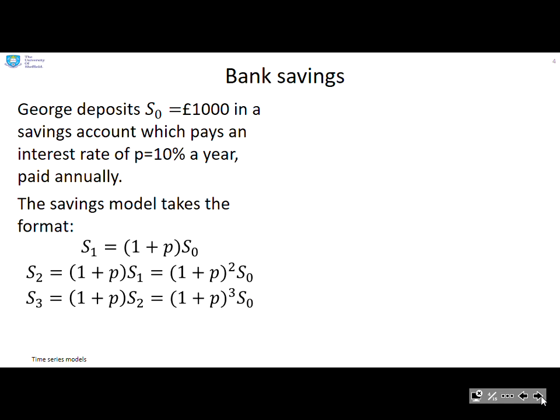Bank savings then. George deposits a certain amount here, £1,000, into a savings account which pays a very generous rate of 10% a year. What's the savings model? Well, you would very confidently write that after one year, he's going to have (1 + p)S_0, where p is the interest rate. After the second year, he's going to have (1 + p) times what he had after the first year. And after the third year, (1 + p) times what he had after the second year. And you can put these together and you can see after the third year, he's got (1 + p)^3 times what he put in.